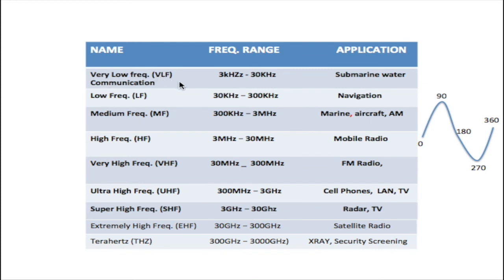First of all, we have the very low frequency, the VLF, which has a frequency range between 3 kilohertz and 30 kilohertz, and this is widely used for submarine services underwater. This frequency can penetrate water very well. Now, the low frequency, LF, has a range between 30 kilohertz and 300 kilohertz, and this is used for navigation.